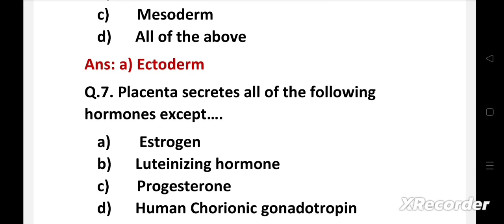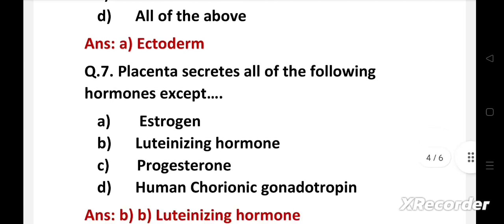Next question. Placenta secretes all of the following hormones except: Option A: estrogen, B: luteinizing hormone, C: progesterone, D: human chorionic gonadotropin.